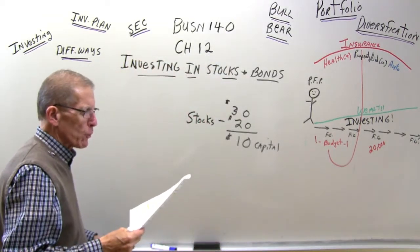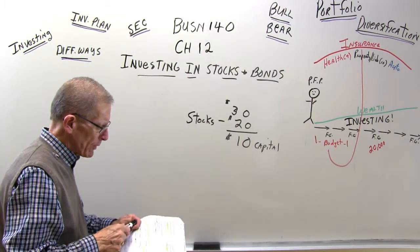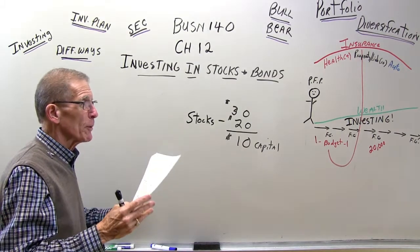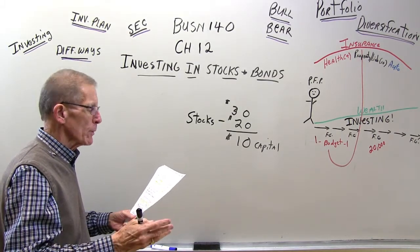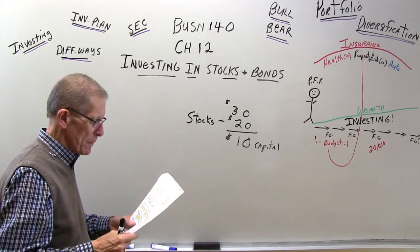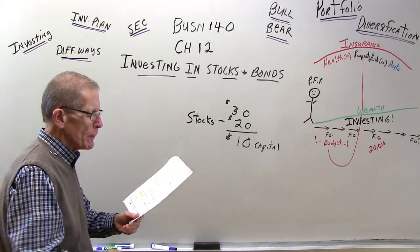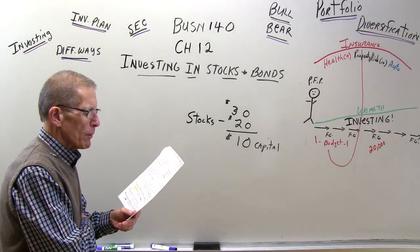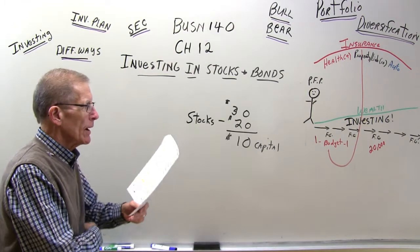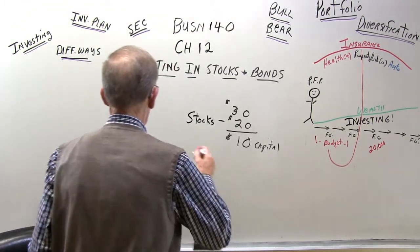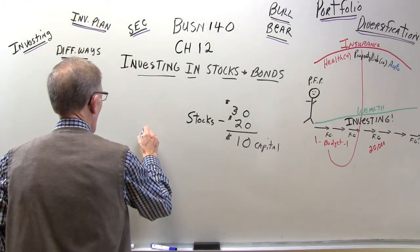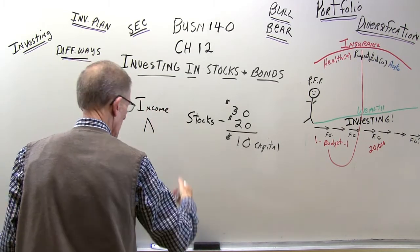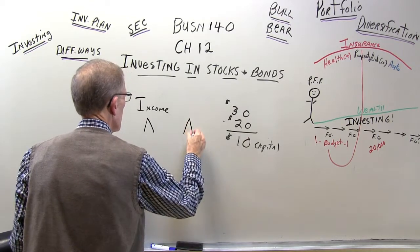The risk-return trade-off: the three returns from investing are interest on interest, capital gain, and current income. The universal rule of investing means that if you want a higher level of return, you'll probably have to accept greater exposure to risk. The higher the income, the higher the risk.